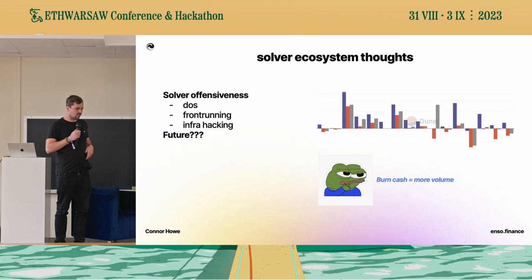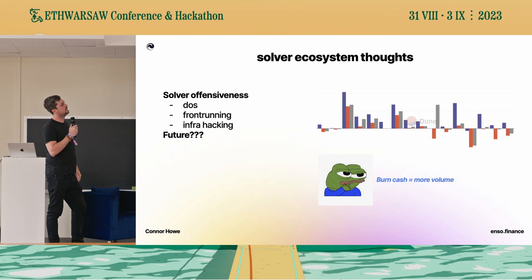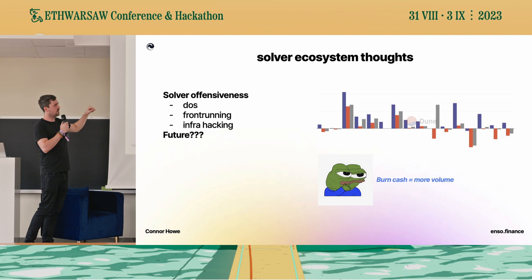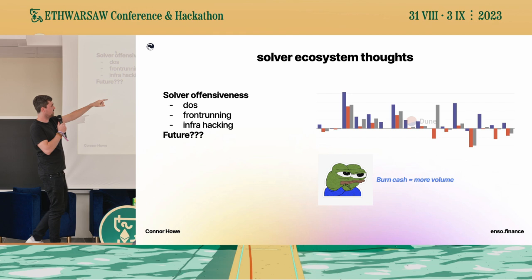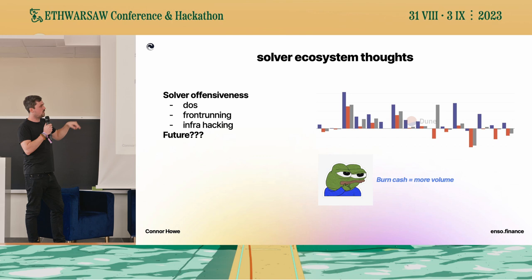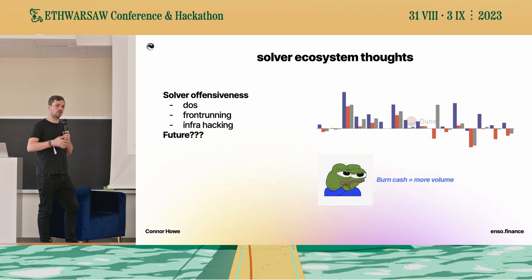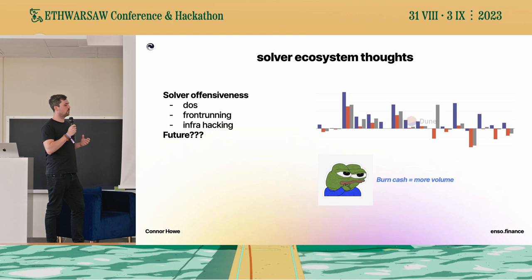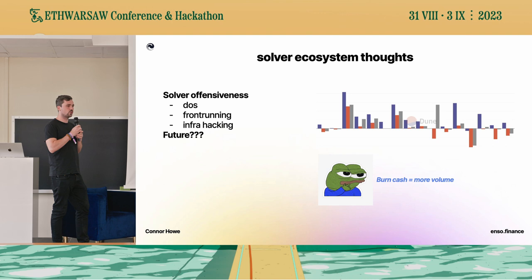Here are some general thoughts on being a solver. The solvers are basically taking your intention — I want to go from X to Y — and finding the best route. In the graph shown, the solver with the nicest line on top of the line is us. The solvers below are losing money on every single trade — they're deliberately burning cash to obtain more volume so they can raise money. The solver game is now turning into a zero-sum game. You will not make money as a solver because you're pushed to lose money to obtain more volume and push all competition out.